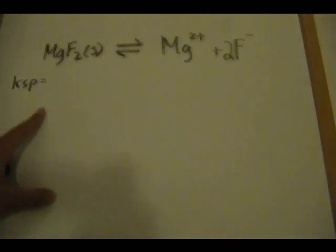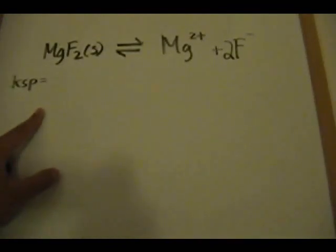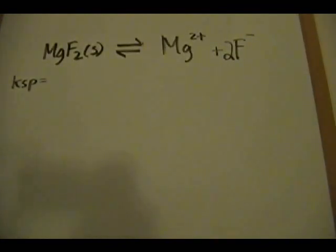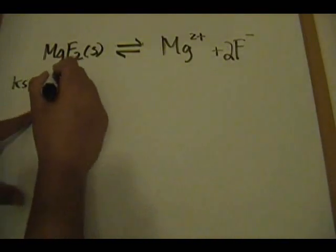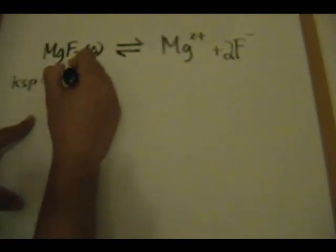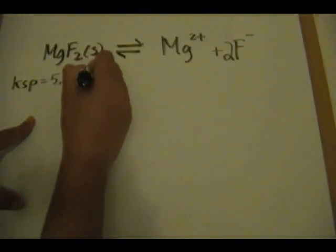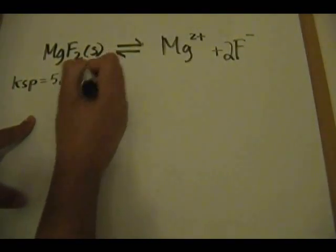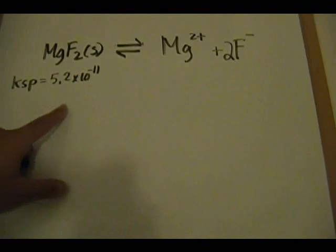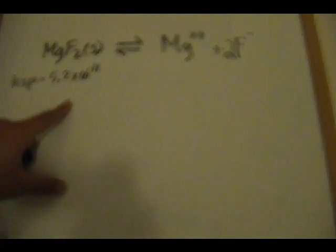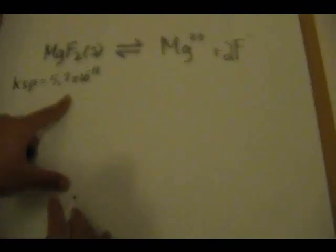The Ksp value for magnesium fluoride is 5.2 × 10⁻¹¹.